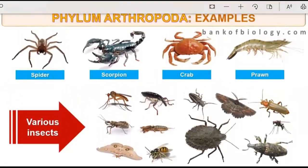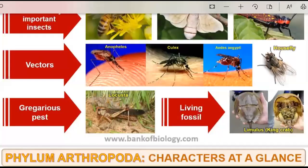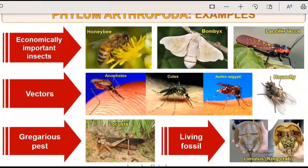Examples include crab, prawns, scorpion, and spider. All insects also fall in the category of Arthropoda. That is why this phylum is the largest phylum — because there is the largest diversity in it, and this phylum has the largest biodiversity of the animal kingdom. There are also a lot of living fossils present here.